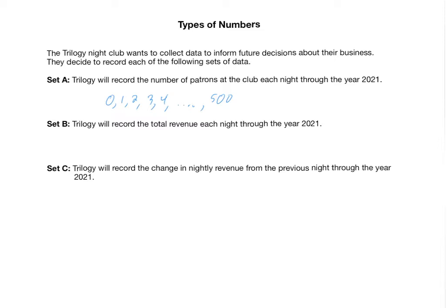In the next set, they want to record the total revenue each night through the year 2021 — the amount of money they bring in each night. Is it the same as Set A, or something different? Well, technically they could still bring in $0 if nobody's there. But now they can, for example, bring in $172.53, or $2,355.41. Decimals now make sense in this scenario, whereas they did not make sense for patron counts. So there's a big difference between these two sets.